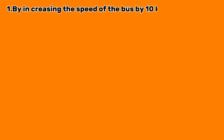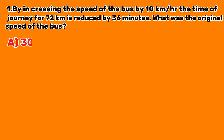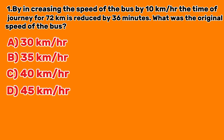Question 1: By increasing the speed of the bus by 10 km per hour, the time of journey for 72 km is reduced by 36 minutes. What was the original speed of the bus? A. 30 km per hour. B. 35 km per hour. C. 40 km per hour. D. 45 km per hour. Answer A: 30 km per hour.